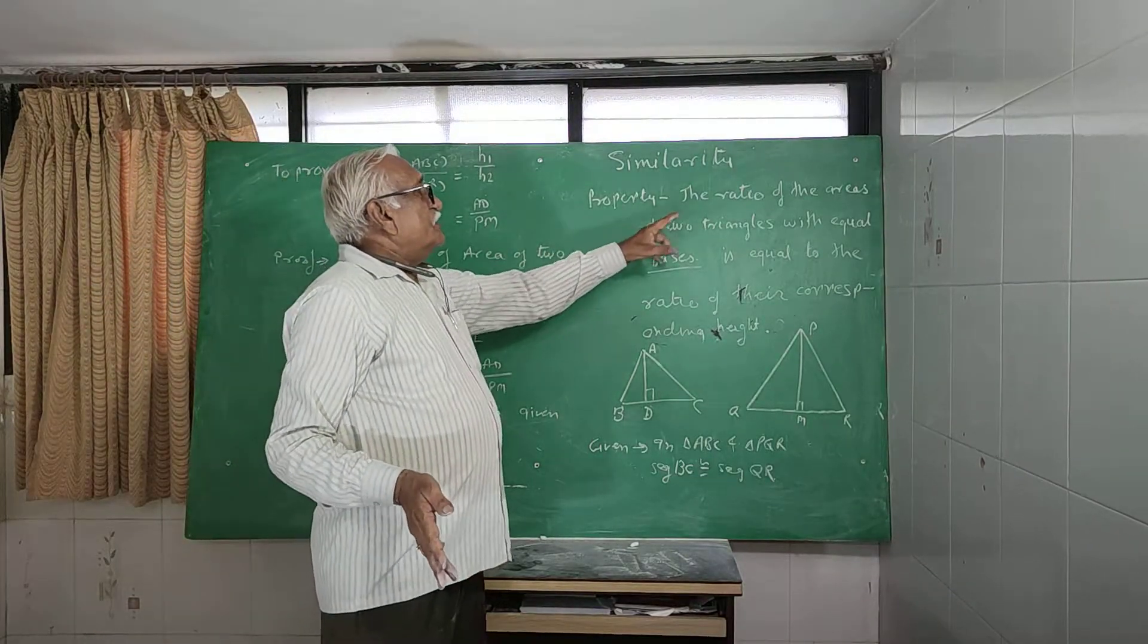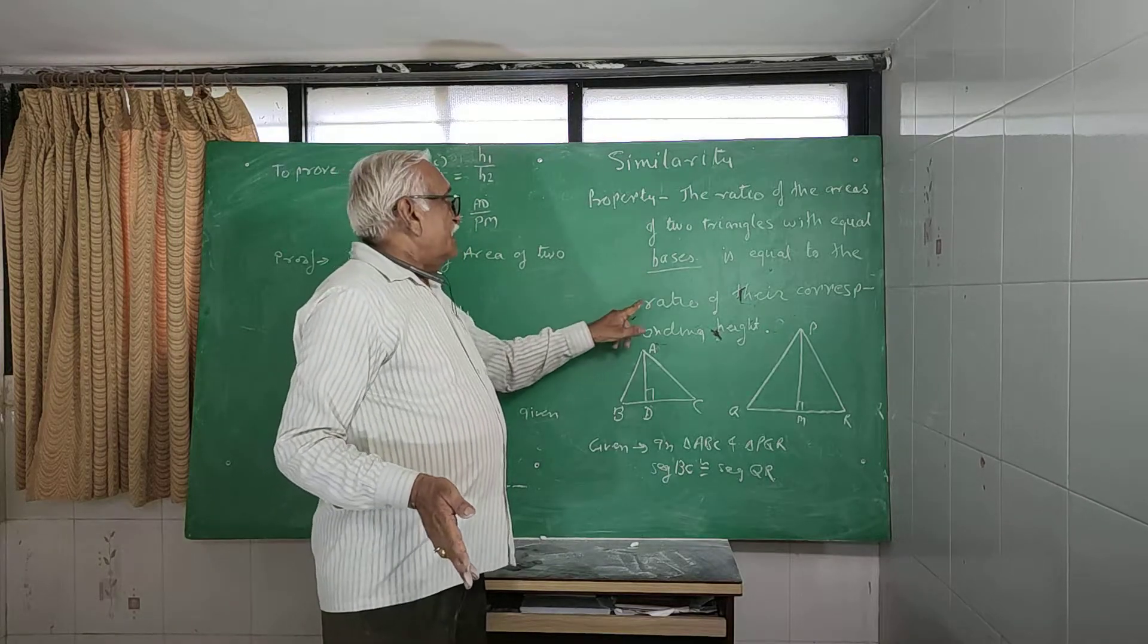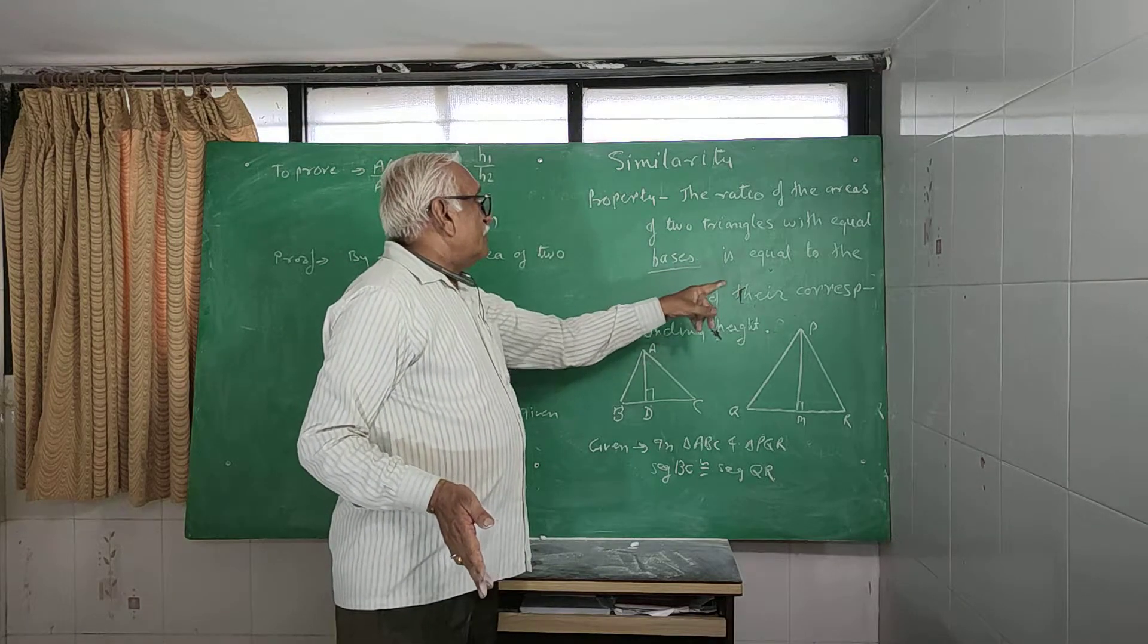Second property: the ratio of the area of two triangles with equal base is equal to the ratio of their corresponding height.